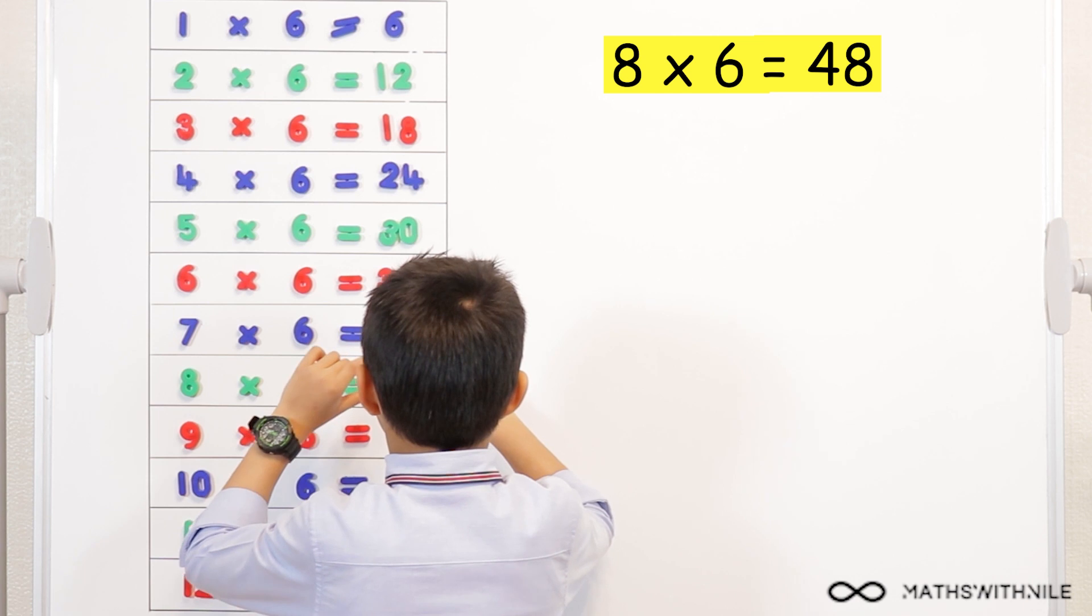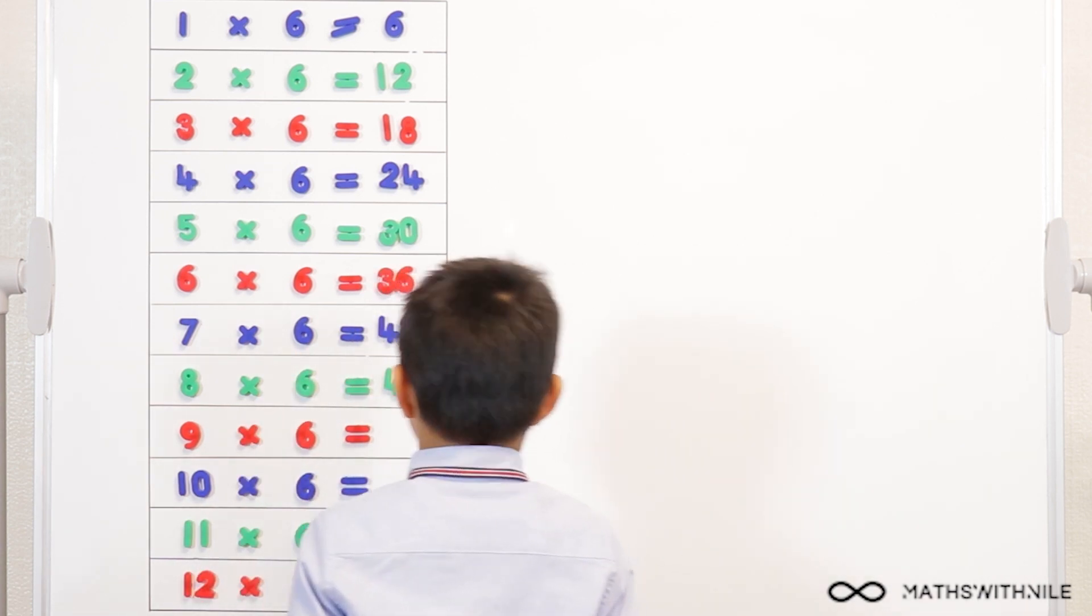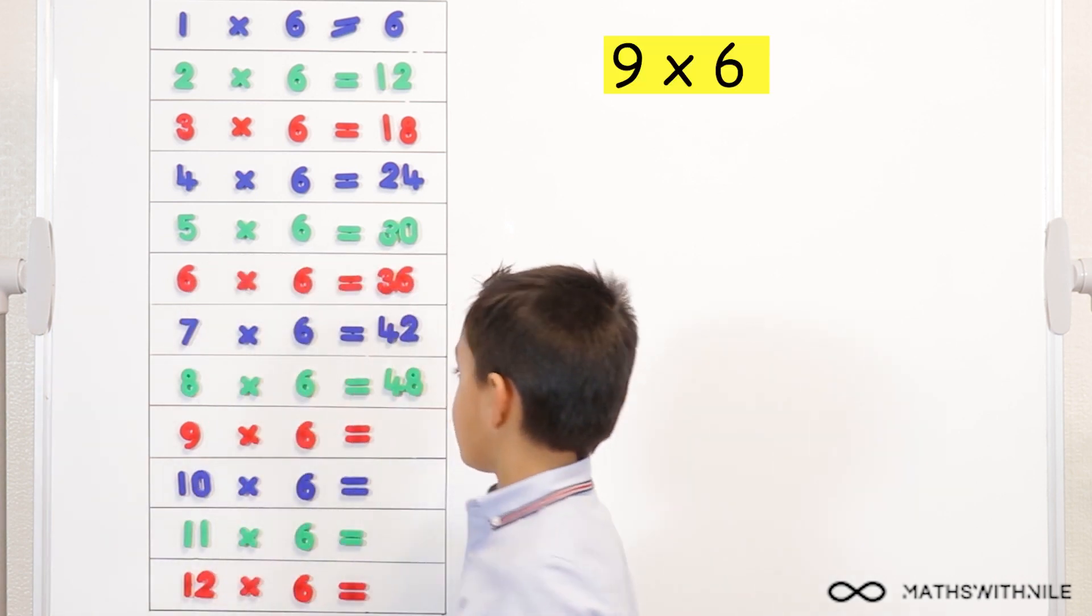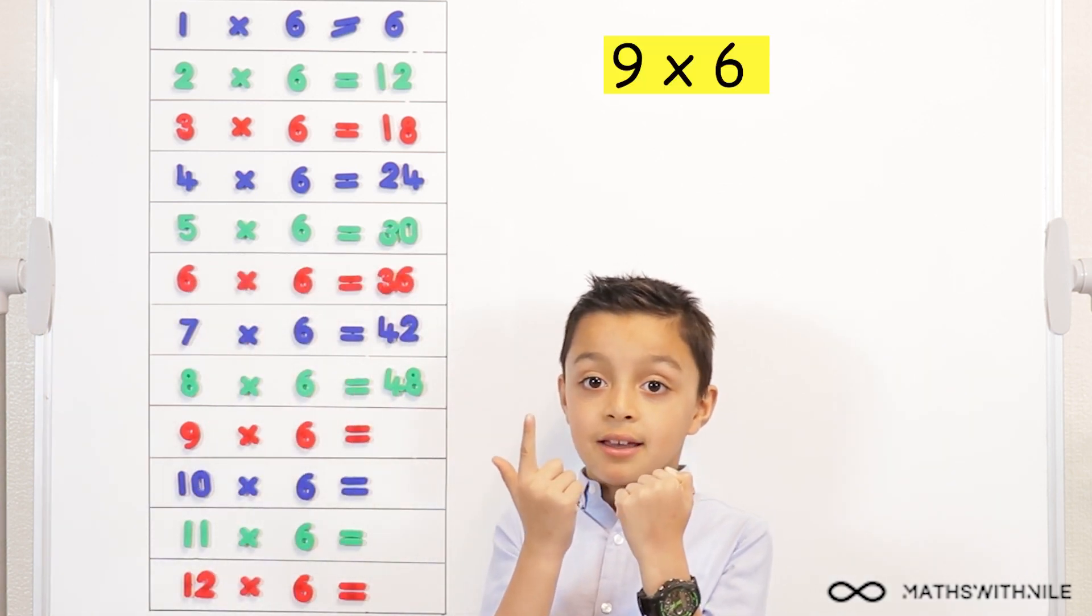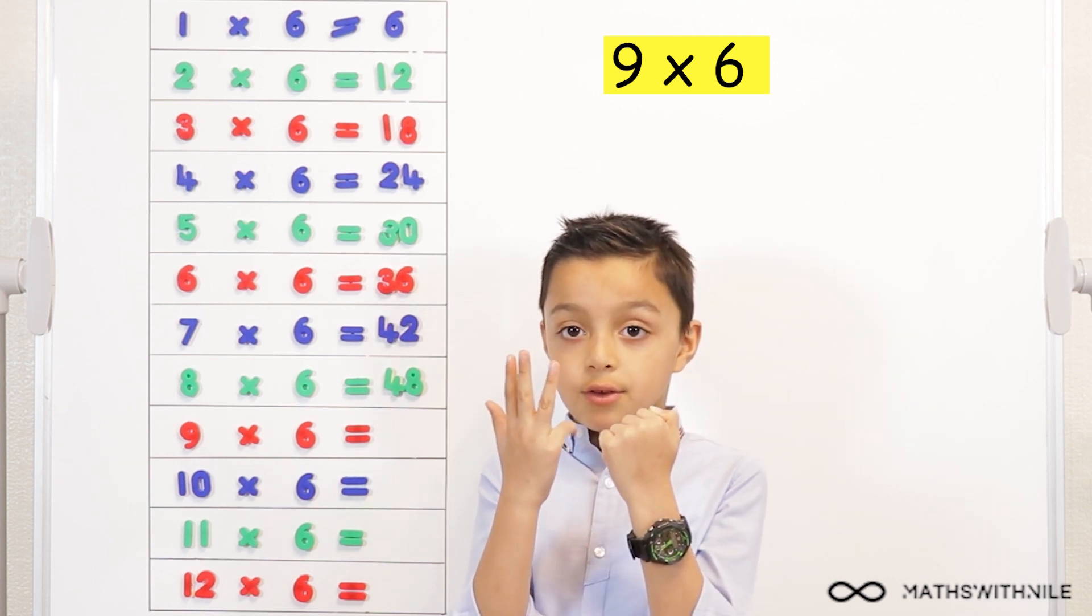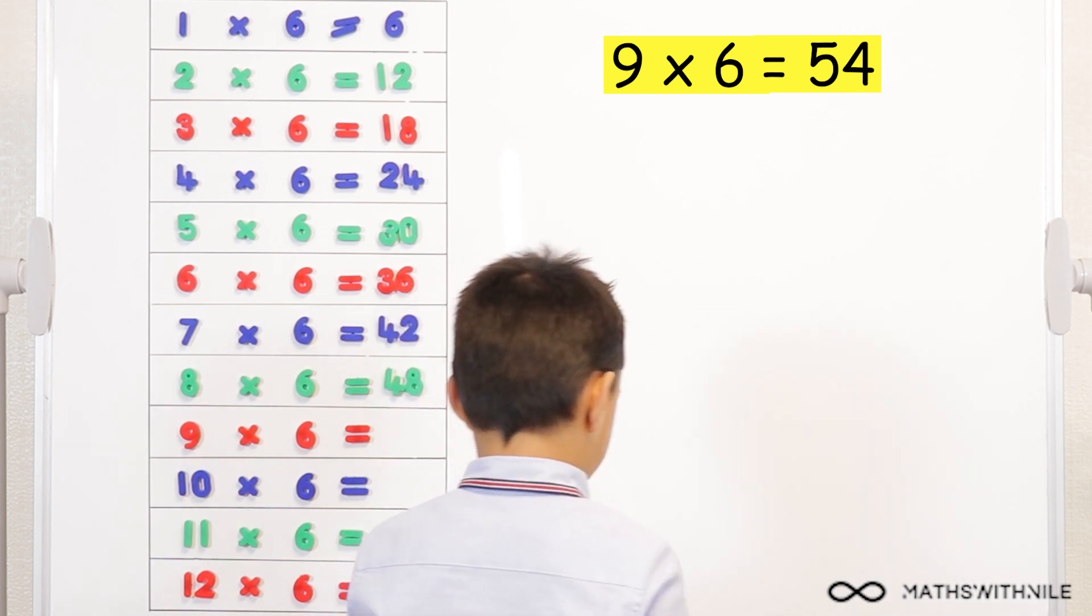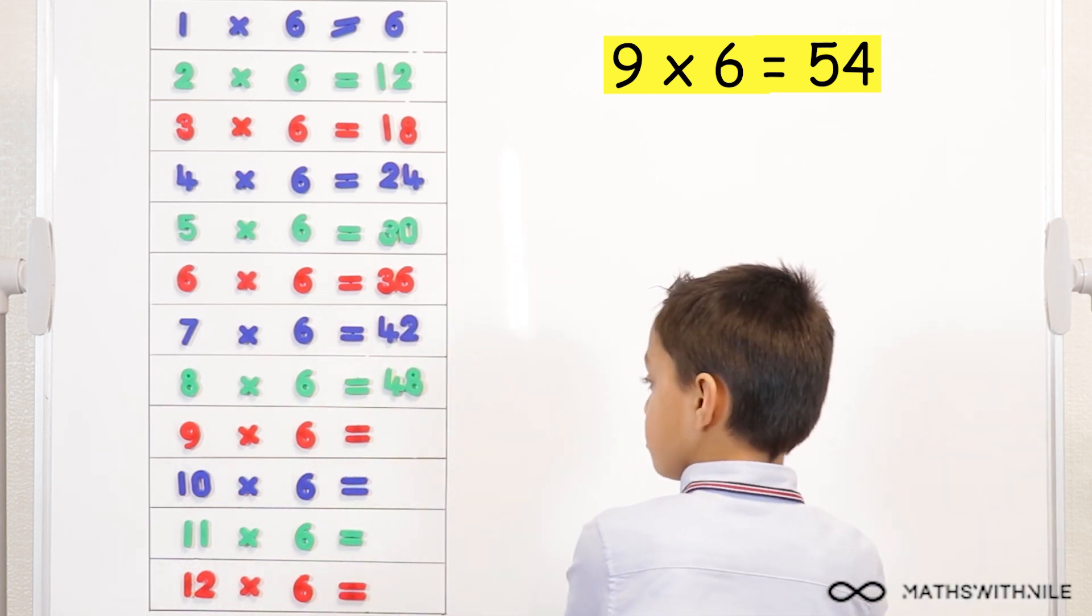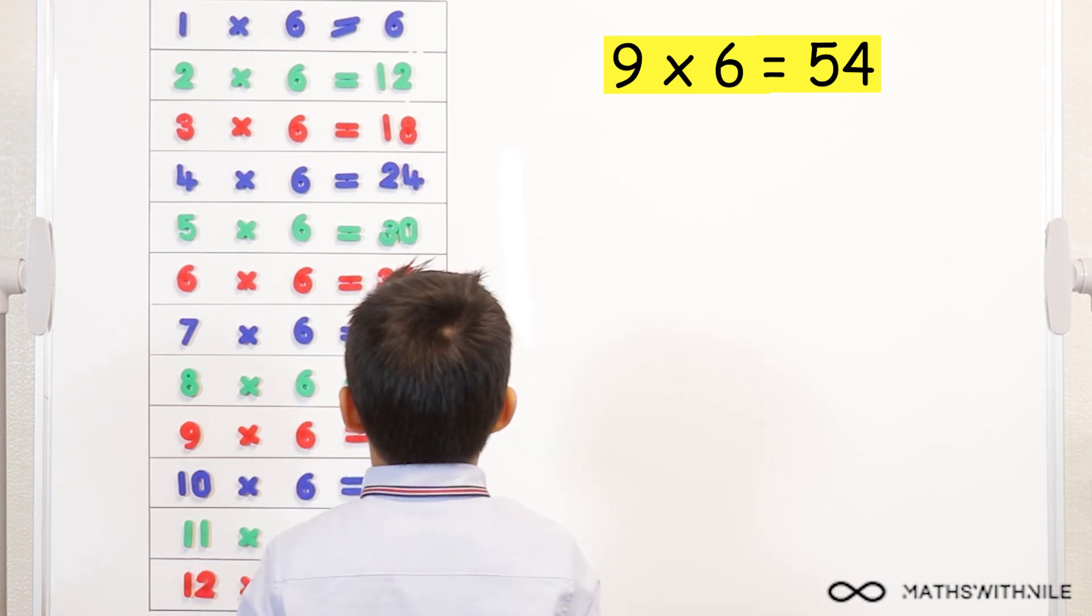This is actually the first time I've done my six times table. Okay, nine times six, forty-eight, forty-nine, fifty, fifty-one, fifty-two, fifty-three, fifty-four. I think you're doing a brilliant job for your first time.